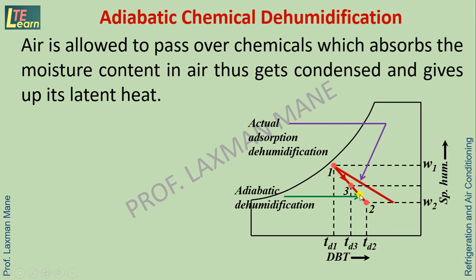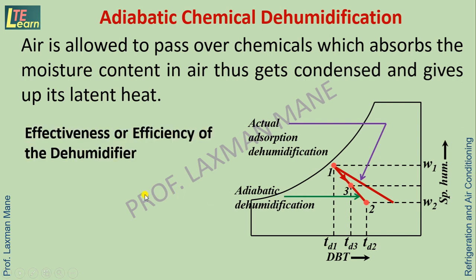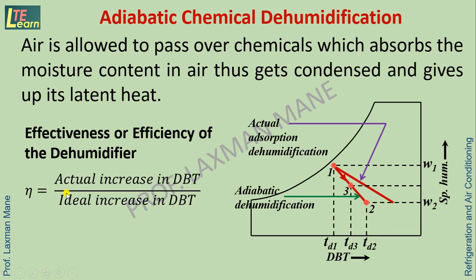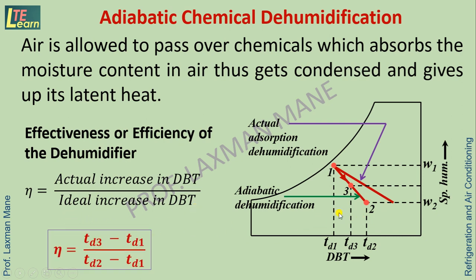The effectiveness or efficiency of the dehumidifier is the ratio of actual increase in dry bulb temperature to the ideal increase in dry bulb temperature. Actual increase in dry bulb temperature is Td3 − Td1, and ideal increase is Td2 − Td1. So efficiency = (Td3 − Td1) / (Td2 − Td1).